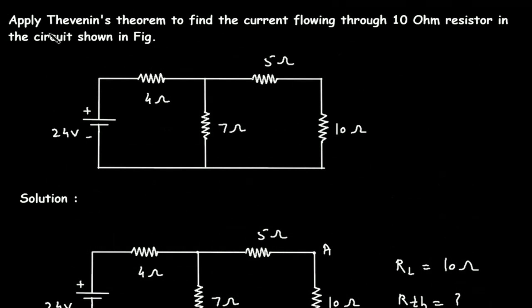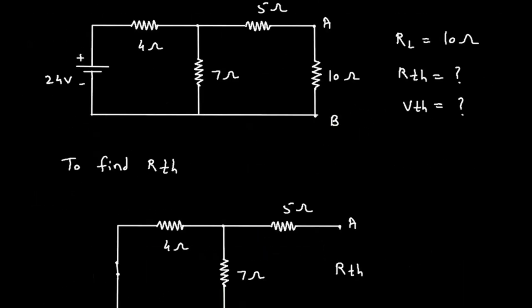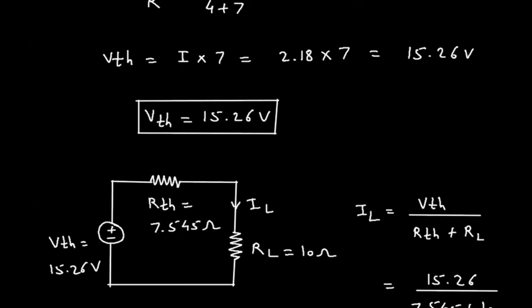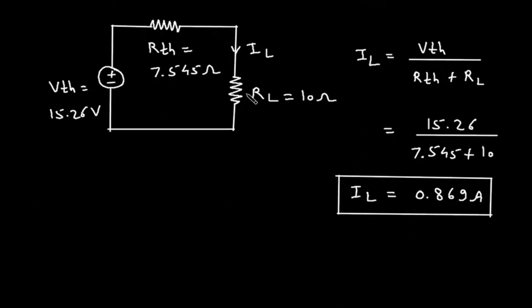We had to apply Thevenin's Theorem to find the current flowing through the 10 ohm resistor in the circuit shown in the figure. The current flowing through the 10 ohm resistor is 0.869 ampere.